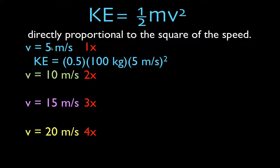So when the object is going five meters per second, we're going to calculate its kinetic energy. It has a mass of 100 kilograms. We're going to square the velocity, just the velocity. So it's five squared. Five squared is 25 times 100 is 2500 times one half is 1250.